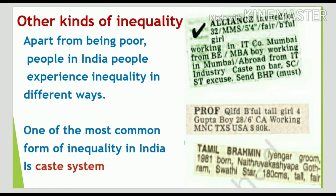People in India, apart from being poor, experience inequality in different ways. One of the most common forms of inequality in India is the caste system. If you think that this form of inequality is not there in urban areas of India, then you are wrong. You can see the matrimonials on the right hand side and you will see how important the issue of caste is — it still continues to be in the minds of highly educated urban Indians.